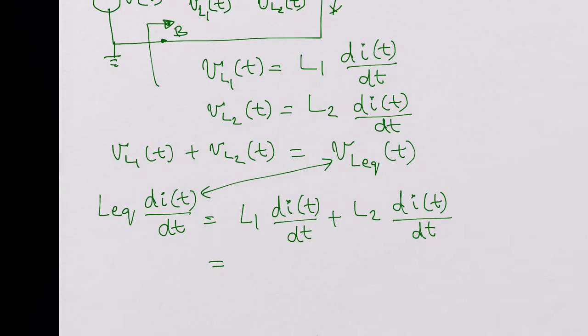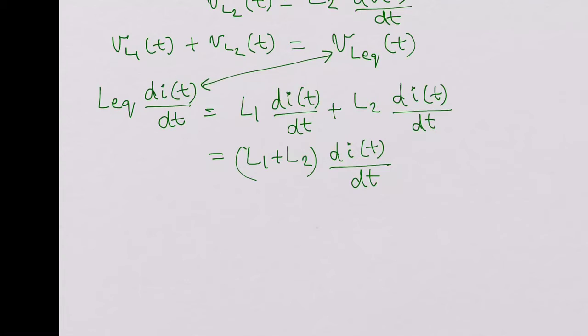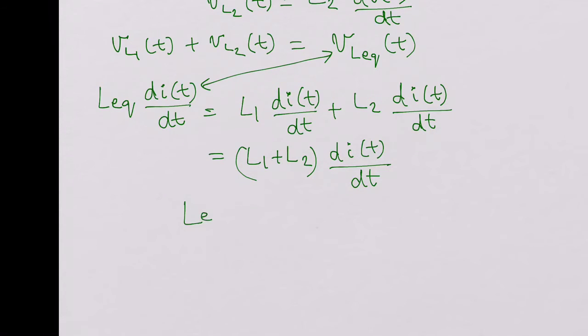Now from this you can factor out: L1 plus L2 times dI of t over dt. From this we can see that L equivalent equals L1 plus L2.